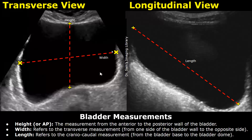Next, you can switch to a longitudinal plane to measure the length of the bladder. Place one caliper at the bladder dome — the superior aspect of the bladder — and the second caliper at its base, and you will obtain the length of the bladder.